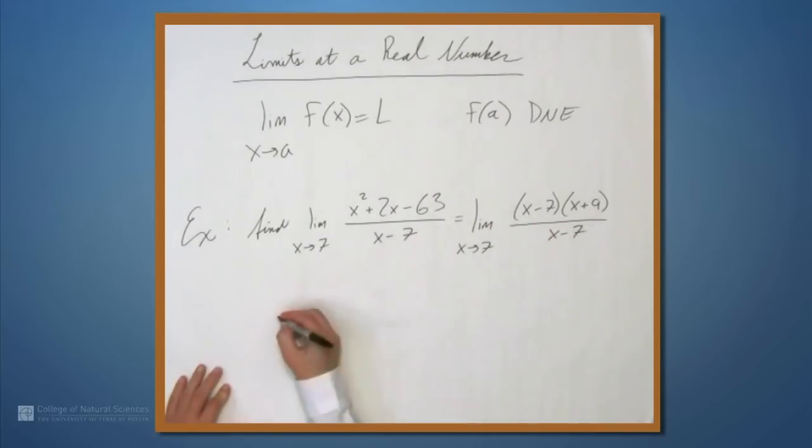So now these x minus 7s cancel, and we're left with the limit as x approaches 7 of x plus 9. And now we can plug 7 in to get 16. So the limit as x approaches 7 of this thing is 16. Let's see what this means graphically.